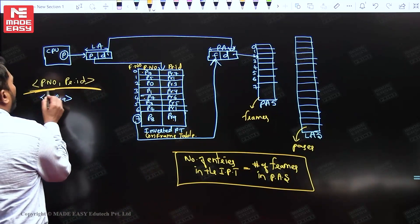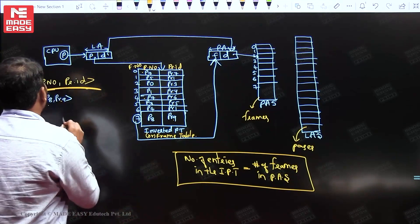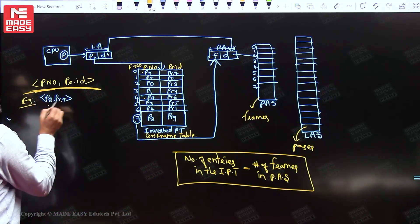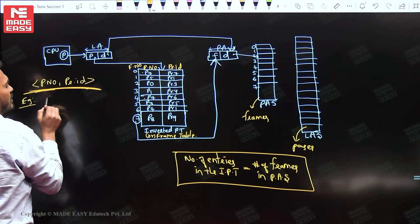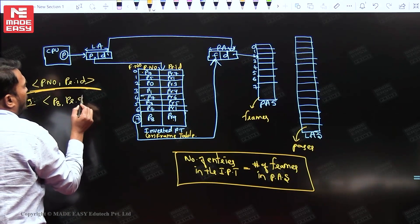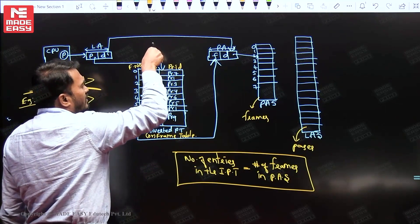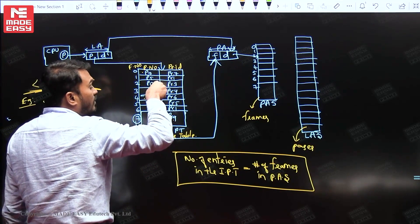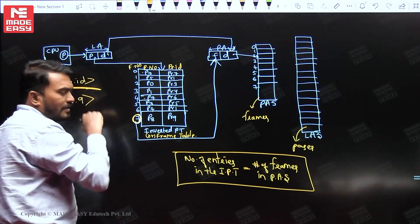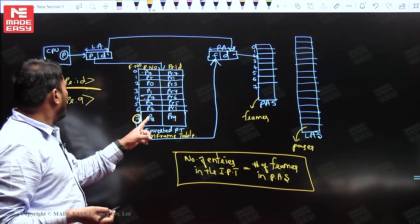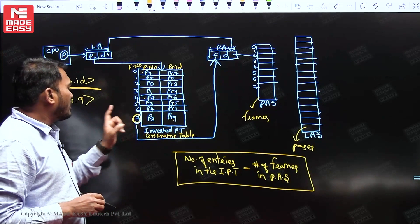We take both the page number and process ID to search in the inverted page table. For example, if we want page number 8 of process 9, we search through the table with both parameters. When we find the matching entry, we take the corresponding frame number. So, page number 8 of process 9 is available in frame number 7.